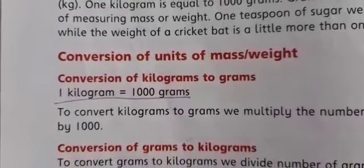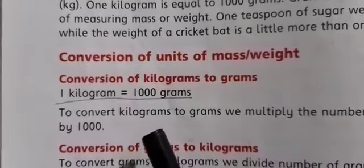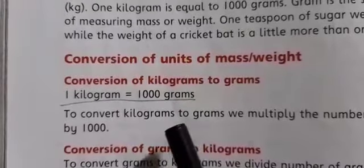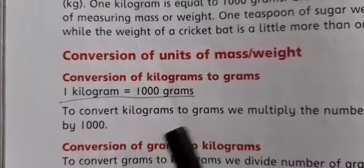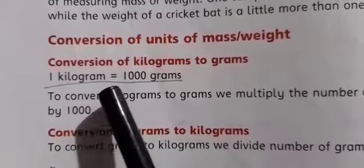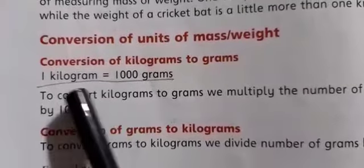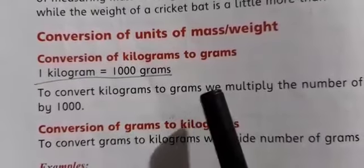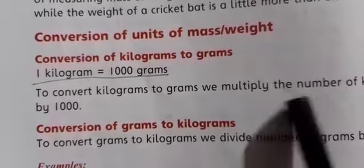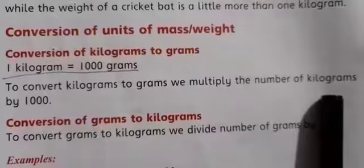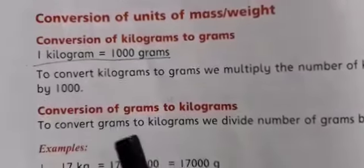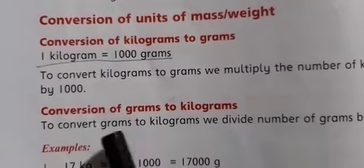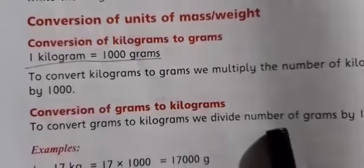There is another unit: milligram. The tablets we use — their weight is in milligrams, their salt content is in milligrams. So what they are telling you: one kilogram has one thousand grams. To convert kilograms into grams, we multiply the number of kilograms by one thousand. To convert grams into kilograms — that is, smaller to bigger — we divide the number of grams by one thousand.